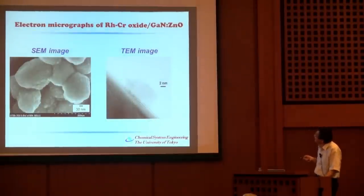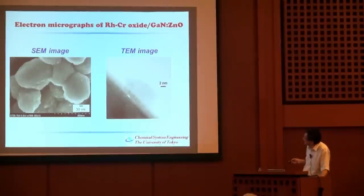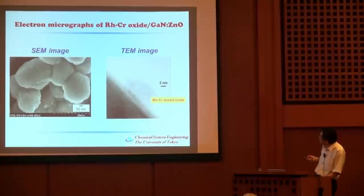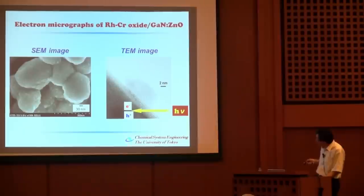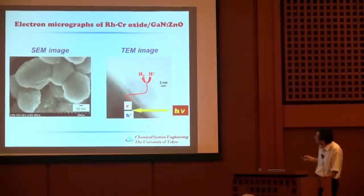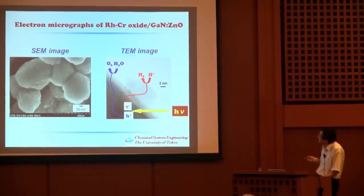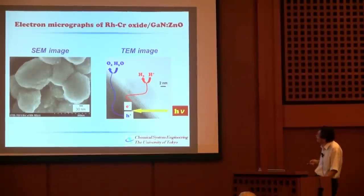From these observations we can elucidate the reaction mechanism. TEM images show 20–30 nm small particles of Rh/Cr mixed oxide dispersed on GaN:ZnO. Under photo-irradiation, electrons and holes are excited in the GaN:ZnO solid solution. Photo-excited electrons migrate through the interface to the Rh/Cr surface where protons are reduced to H₂. Photo-excited holes migrate to the GaN:ZnO surface where water is oxidized to O₂. This is the reaction mechanism we believe is operating.